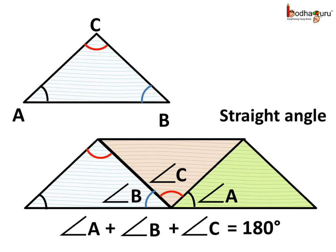When the three angles of a given triangle come together, they form a straight angle. That is, the sum of three angles of the triangle is 180 degrees.